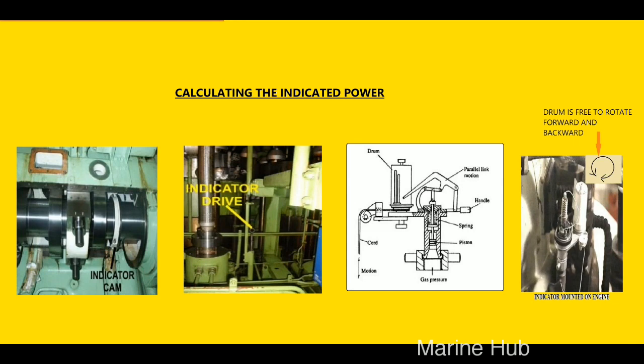The drum of the indicator device is spring-loaded and free to rotate forward and backward, due to pulling and releasing the cord attached to the cam. As the piston moves up and down in the liner, at the same time the marker in the indicator device also moves up and down due to gas pressure. This is the way of tracing the power card.